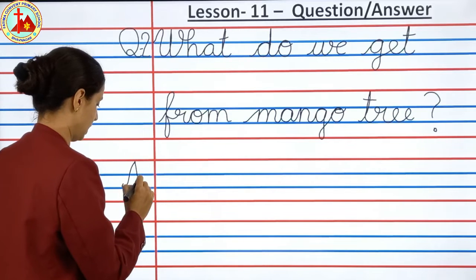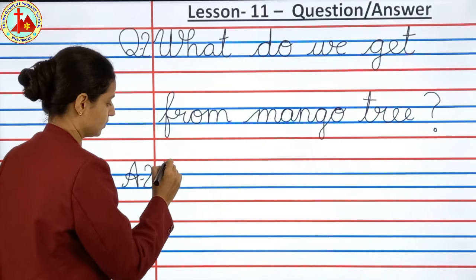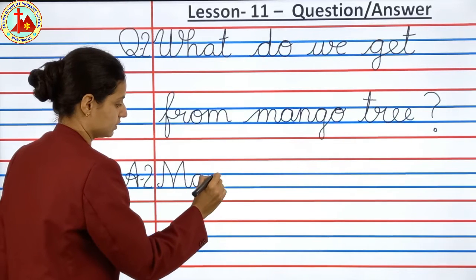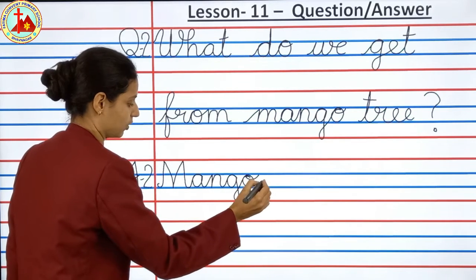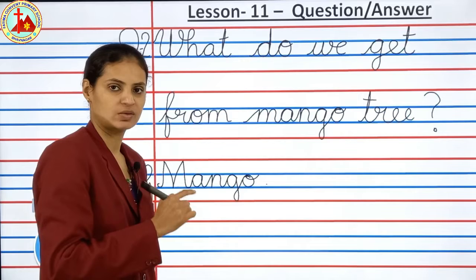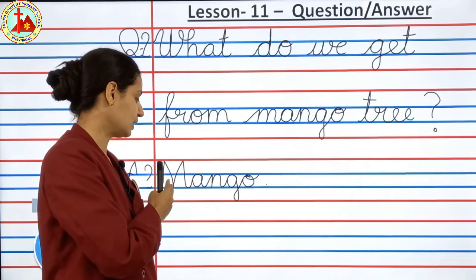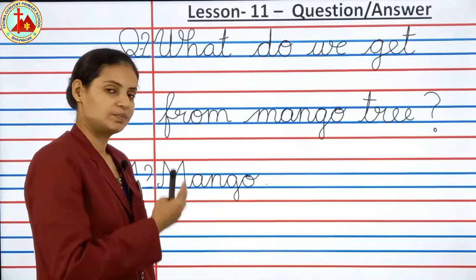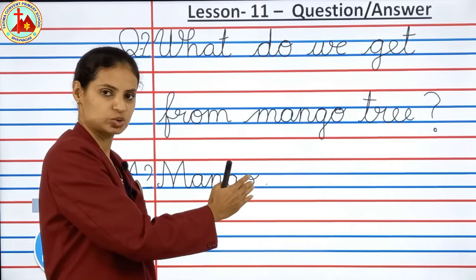Write answer 2. Mango. First letter cursive capital: M, A, N, G, O. Mango. Full stop. Only the first letter should be cursive capital; rest of the letters should be cursive small. Many of you are writing all the letters capital or not writing the first letter cursive capital. Be very careful.